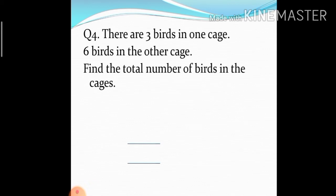We will write solution. First cage has three birds, and second cage has six birds. So when we add them, 3 plus 6 is 9. So our answer is 9 birds.